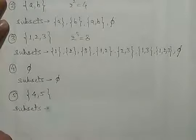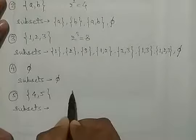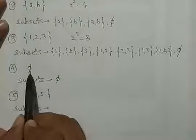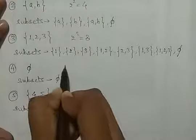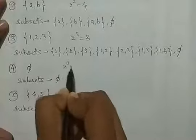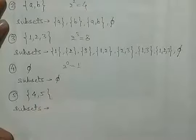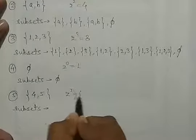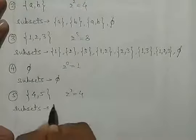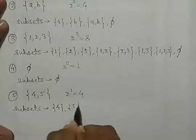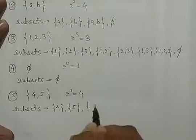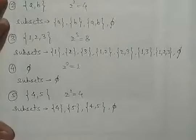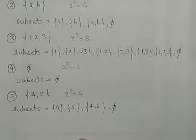फिर, 4 and 5 — so again, देखिए यहाँ पर ∅ null set है, और null set में कोई भी element नहीं होता है. तो जब आप formula में value रखेंगे — 2 to the power 0 — तो वो 1 हो जाएगी. अब यहाँ पर again 2 to the power 2 is equal to 4. Subsets होंगे: {4}, {5}, {4,5}, and ∅. तो यह बात हुई subsets की.